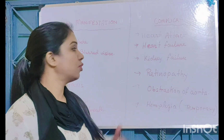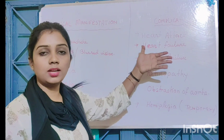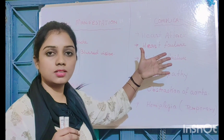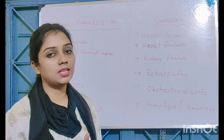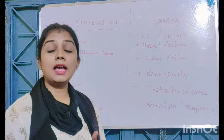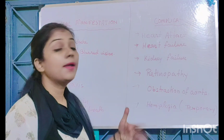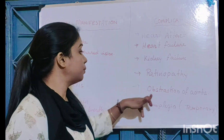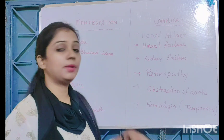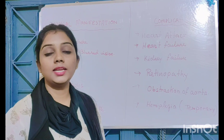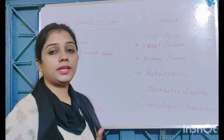Complications of hypertension include heart attack, heart failure, and arterial blockage or arterial pressure causing arteries to become constricted. Kidney failure can also result due to blocked blood supply to the kidney. Retinopathy — damage to the retina due to hypertensive pressure — and hemiplegia (temporary paralysis or inactivity of the lower limbs) are also complications of hypertension.